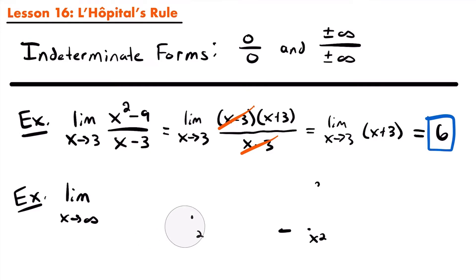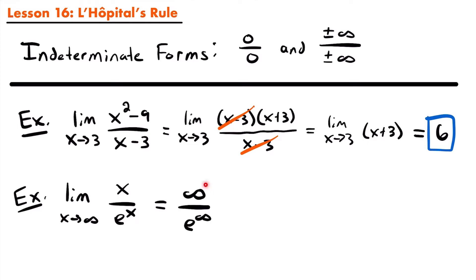For example, what if we had the limit as x approaches infinity of x divided by e to the power of x? As we pick larger and larger values of x, the numerator increases to infinity, and so does the denominator since e raised to an increasing power also becomes larger. Plugging in larger values of x for x equals 1, 10, and 20 shows x divided by eˣ gets closer and closer to 0.